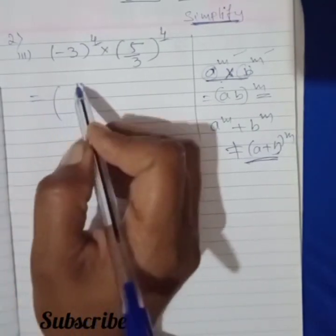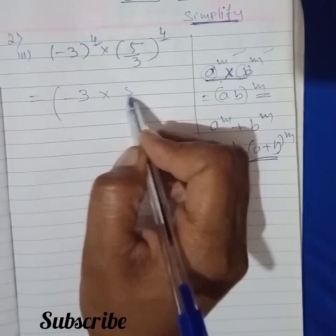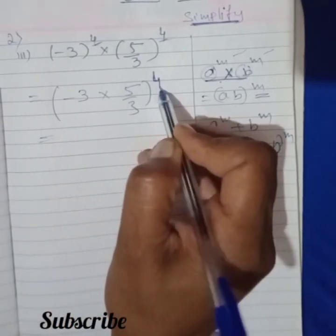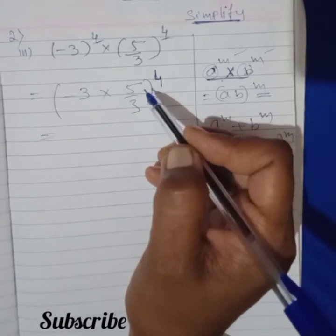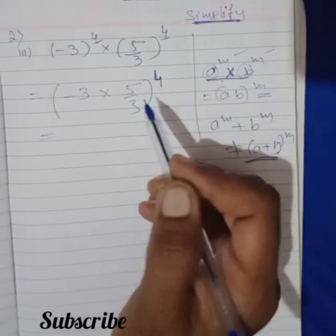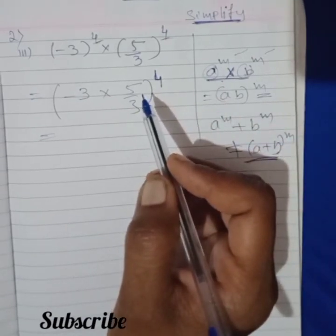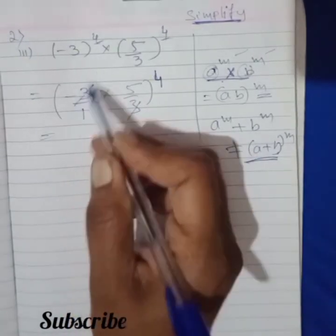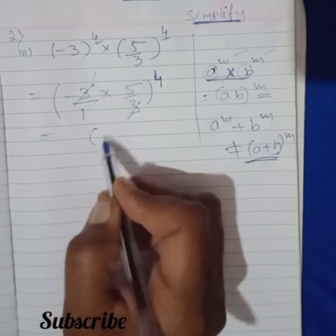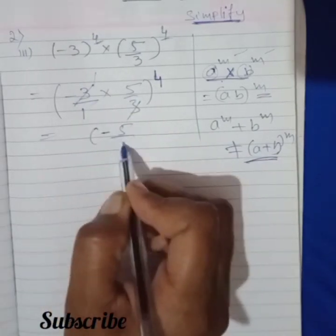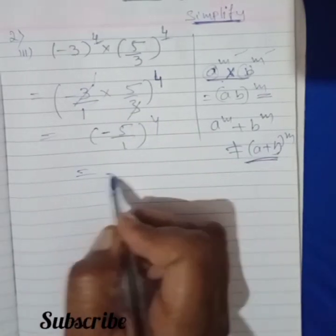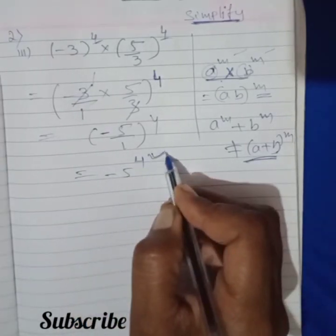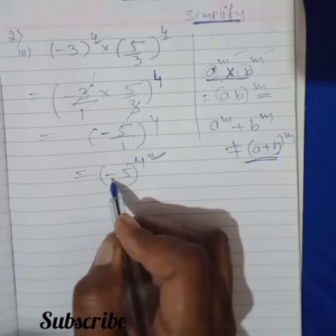Now look at this one. What I am writing here: minus 3 into 5 by 3, raised to 4. I explain different ways of calculation in my shorts and videos so you can simplify solutions without any confusion. Now, it is upon 1 — it gets cancelled. Minus 1 into 5 is minus 5 upon 1 raised to 4, which is equal to minus 5, raised to 4. The power is positive.